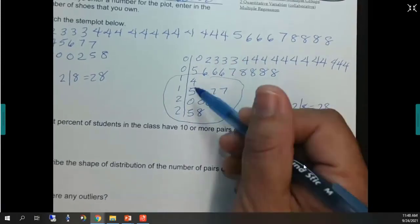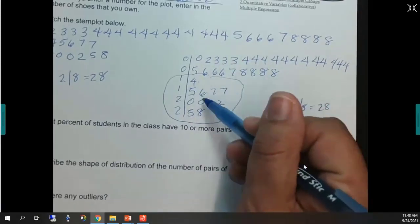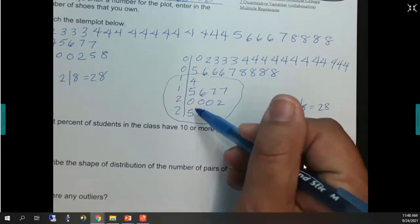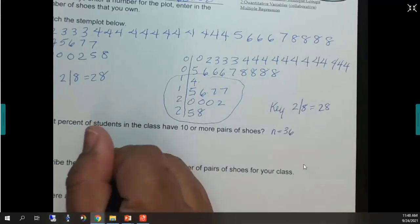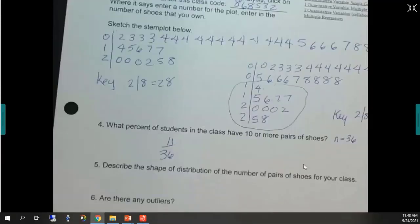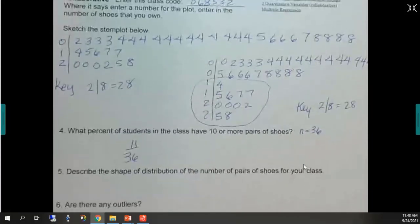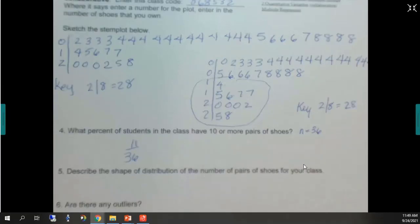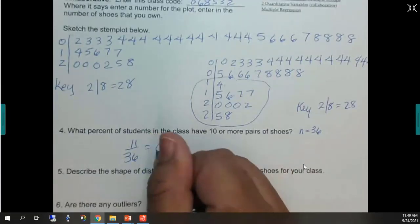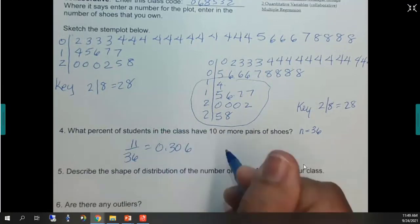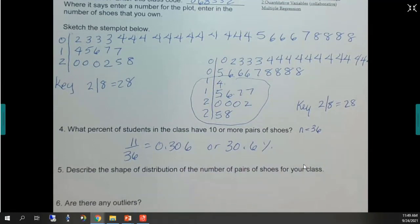And I just count 1, 2, 3, 4, 5, 6, 7, 8, 9, 10, 11. 11 out of 36. I'm sorry. There we go. Have 10 or more. So if I take my calculator. 11 divided by 36. 0.306 or 30.6%. So actually it's a pretty big group have 10 or more.